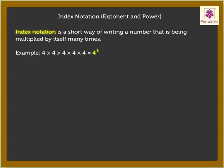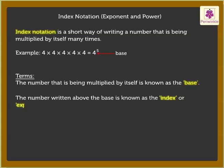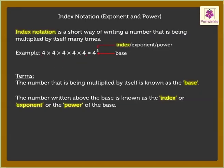To read this, we need to know certain terms. The number that is being multiplied by itself is known as the base. So, here 4 is the base. The number written above the base is known as the Index or Exponent or the Power of the base. It is the number of times that the base must be multiplied by itself. Here, 5 is the Index or Exponent or the Power of the base.